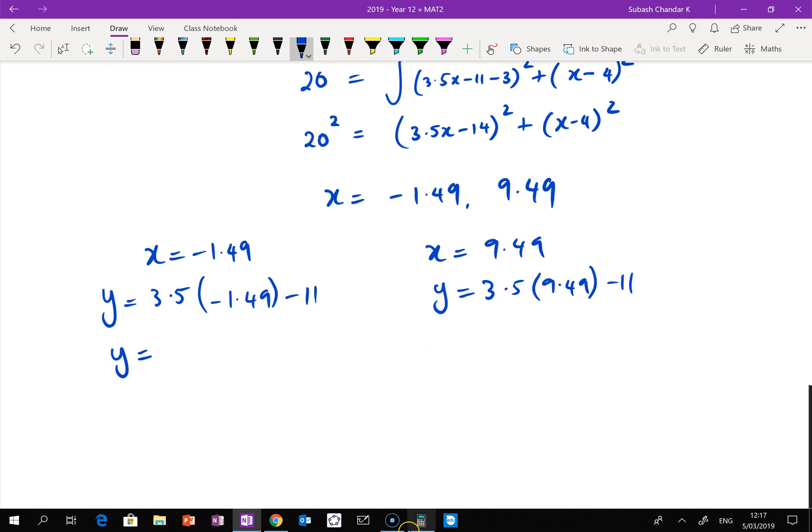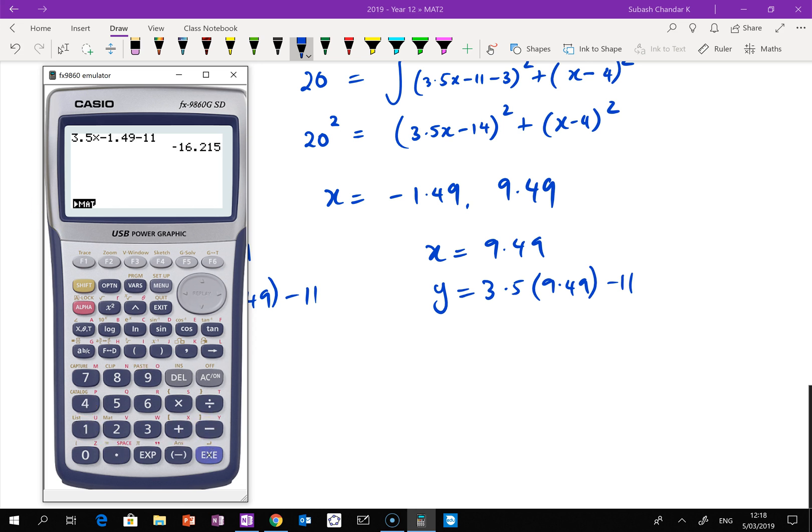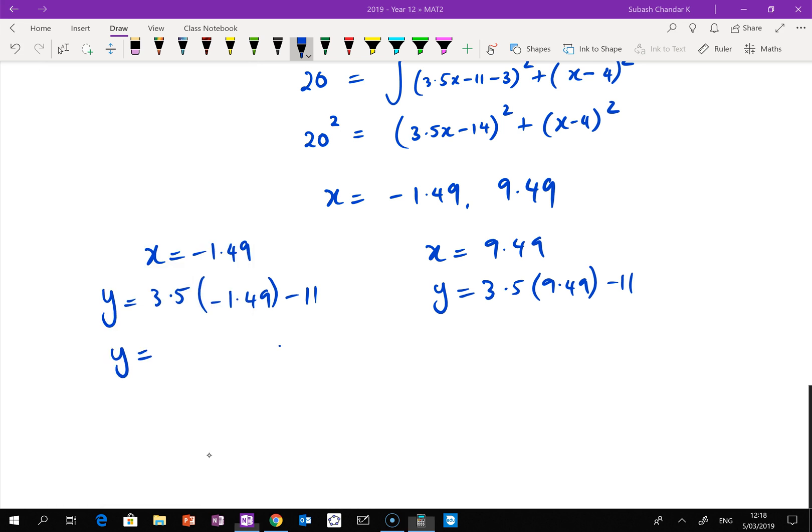So with the first one, 3.5 times negative 1.49 minus 11. So it's negative 16.215.